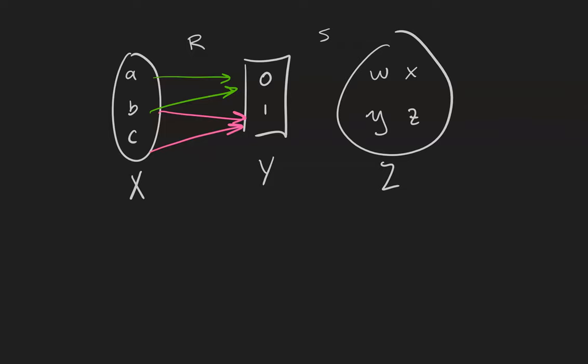Meanwhile, the relation S takes 0 to W and X and Z, and it takes 1 to Y and to Z. RS is going to consist of the pairs in X and Z, where I can draw a direct path from the element of X to the element of Z.